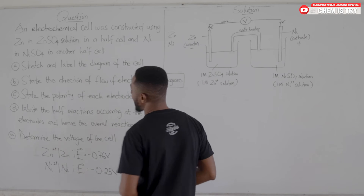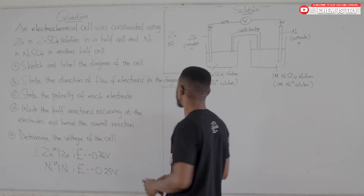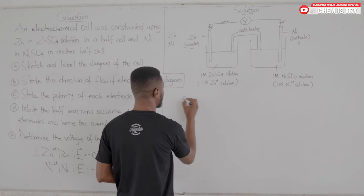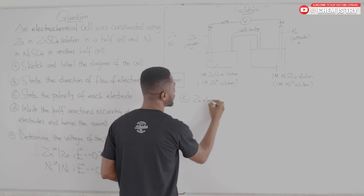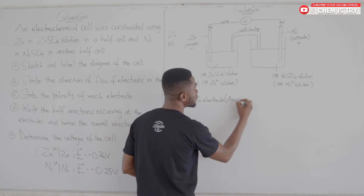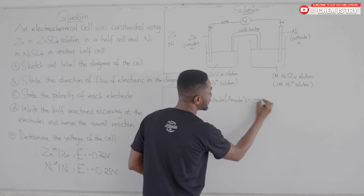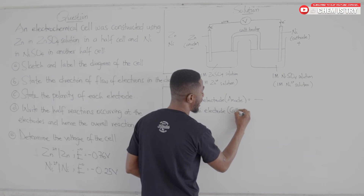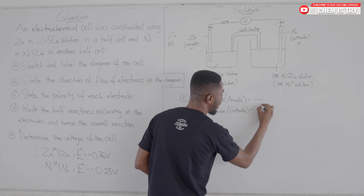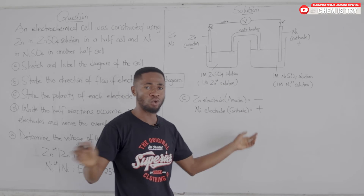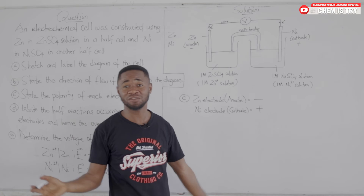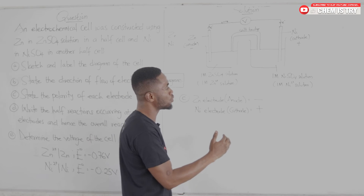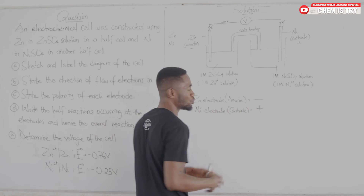For part (c), state the polarity of each electrode. The zinc electrode, also known as our anode, is the negative electrode. The nickel electrode, which is our cathode, is the positive electrode. The poles are either positive or negative, and in a galvanic cell the anode is the negative electrode and the cathode is the positive electrode.